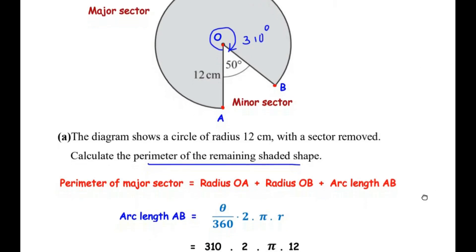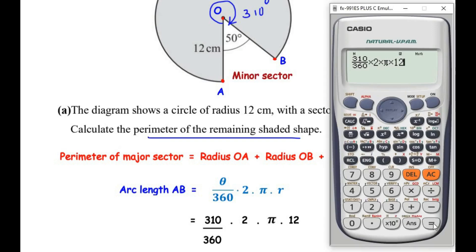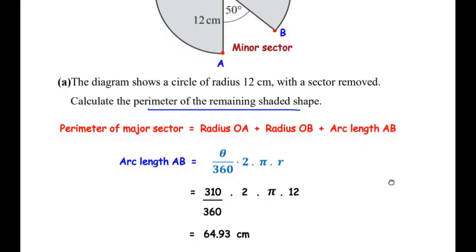The central angle for the major sector is 310 degrees. Substituting the values: arc length equals 310 over 360 times 2π times 12. This gives 62 over 3 times π, or in decimals 64.926, which rounds to 64.93 centimeters. That is the length of arc AB of the major sector.